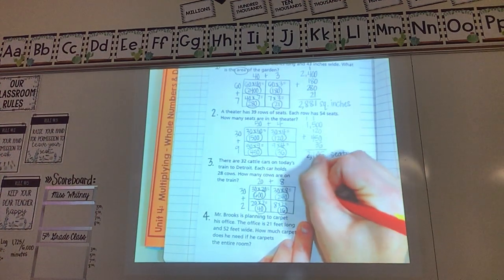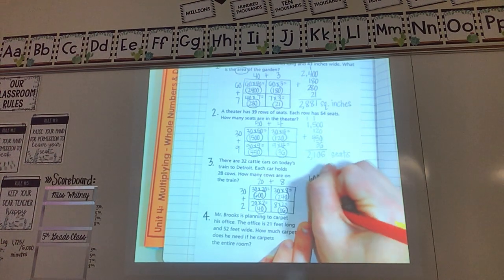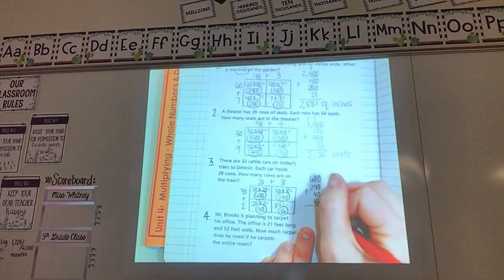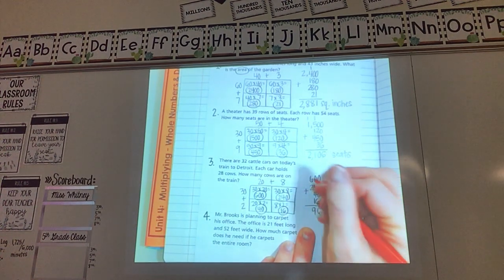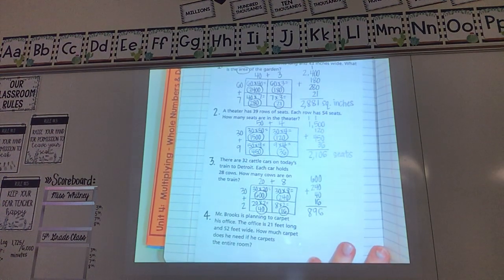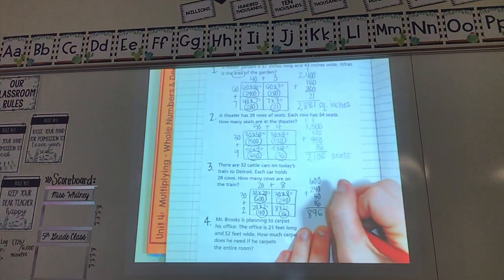600, 240, 40, and 16. Making sure I stack them up nicely. You don't want to mess up on your addition. That would be a 6. That would be a 9. And that would be an 8. So 896. And what would my label be for this one? Cows.